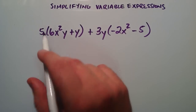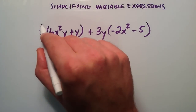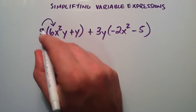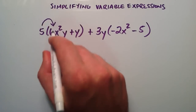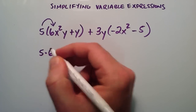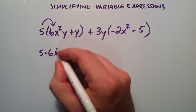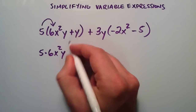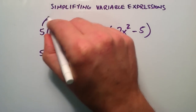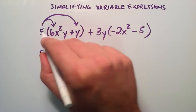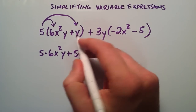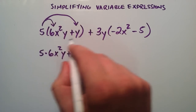So let's go ahead and do that. The first thing, we're going to distribute the 5 into the first term here. So this becomes 5 times 6x squared y. Then we put the addition sign here, and now we distribute into the next term: 5 times y. Now we've taken care of this part of our expression.